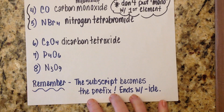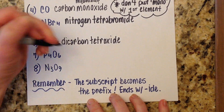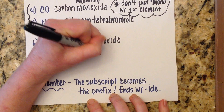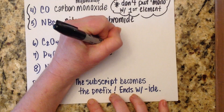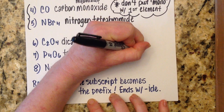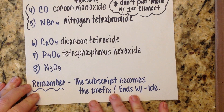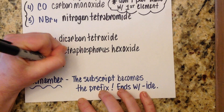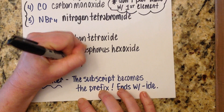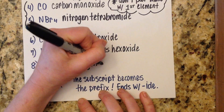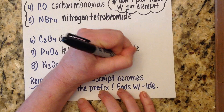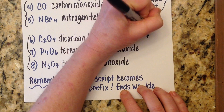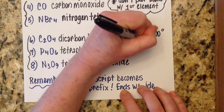Number seven: four phosphoruses and six oxygens — tetraphosphorus hexoxide. Drop the A from hexa before oxide: hex-oxide. Number eight: trinitrogen nonoxide — three nitrogens, nine oxygens, and nona drops its A before oxide. These three examples all illustrate that A-O and O-O combinations just become a single O.